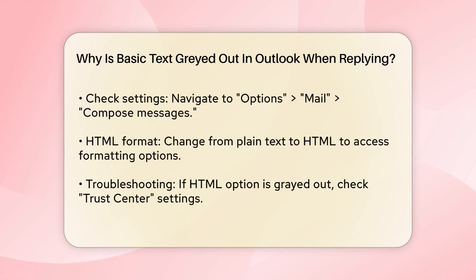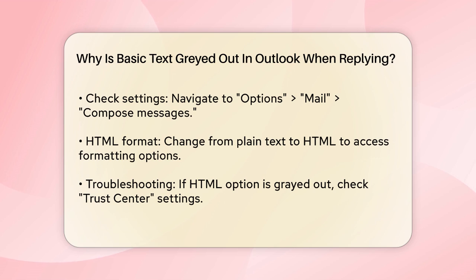To check if this is the case, go to the Options menu in Outlook, then select Mail, and look for Compose Messages. If the option to switch to HTML is grayed out, it might be due to your email format settings. You need to switch from plain text to HTML format to enable these text formatting options.